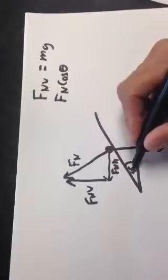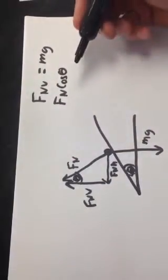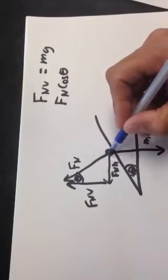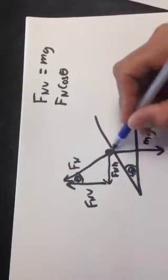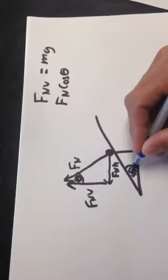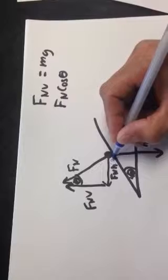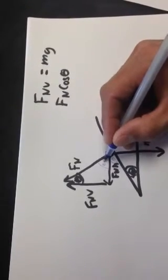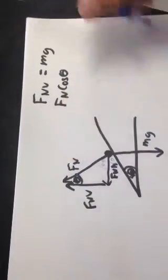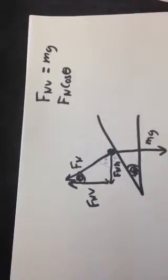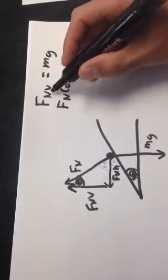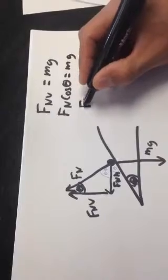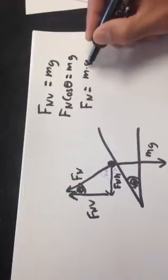The normal force's vertical component is equal to the normal force times the cosine of this angle. If this angle is theta, then this is also theta — look for a Z pattern. This horizontal component is parallel to the ground, and this line intersects them both (the transversal). So this is angle theta, this will also be angle theta. If this is theta, then this is 90 minus theta, and if this is 90 minus theta then this is theta. So FN times cosine theta equals the vertical component, which equals Mg.